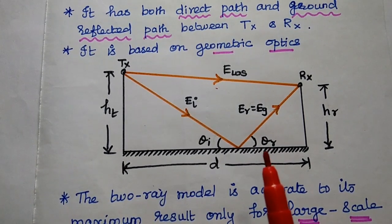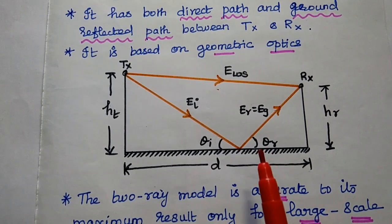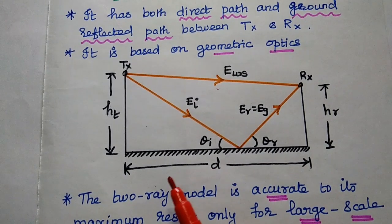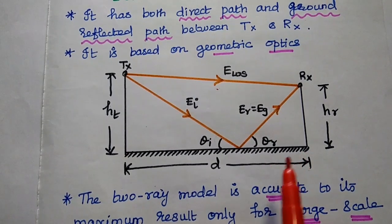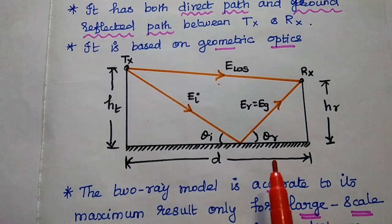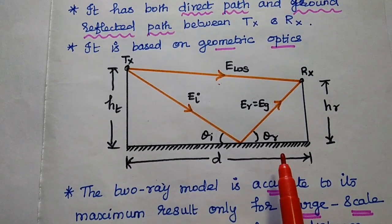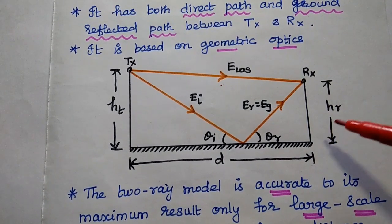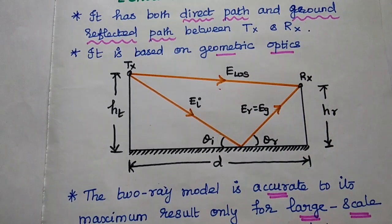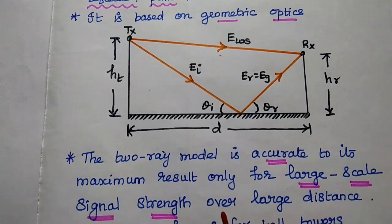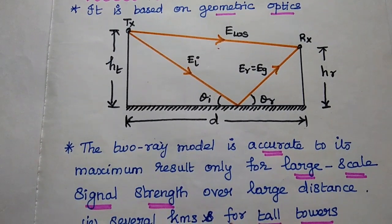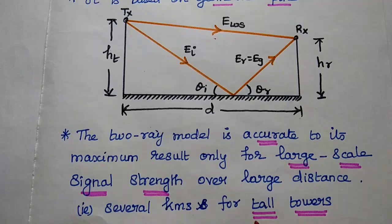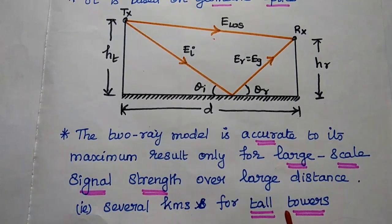This 2-ray propagation model is accurate to its maximum value only for large-scale propagation. Large-scale signal propagation means the distance between the transmitter and the receiver is on the order of several kilometers to hundreds of kilometers. We can consider this model only for tall transmitter and receiver antennas, where the height should always be greater than 1. The 2-ray model is accurate only for large-scale signal strength over large distances, on the order of several hundreds of kilometers, and only for tall towers.